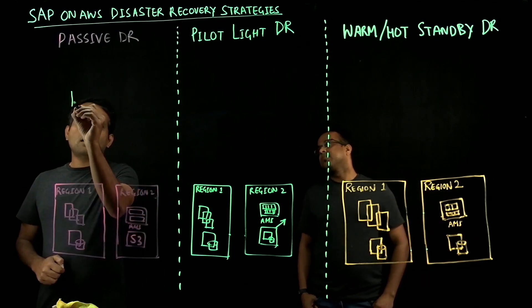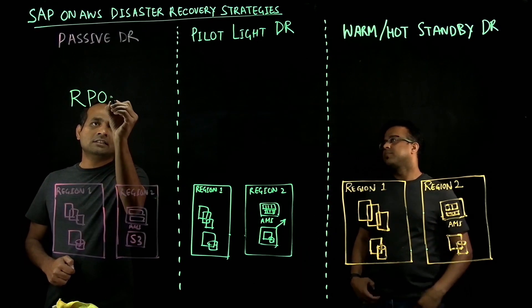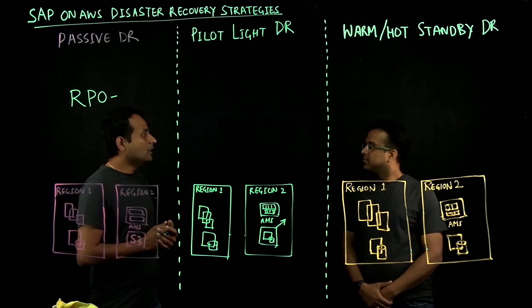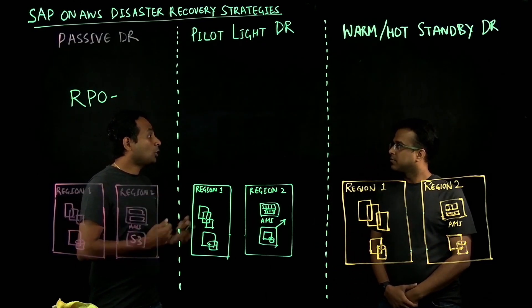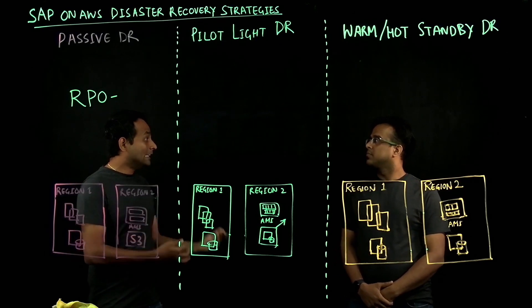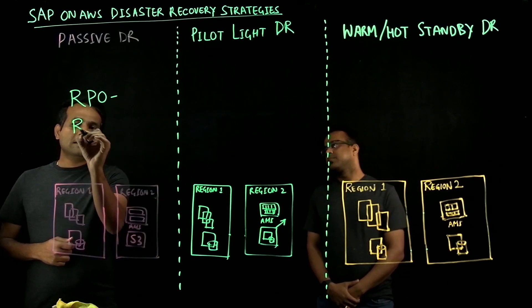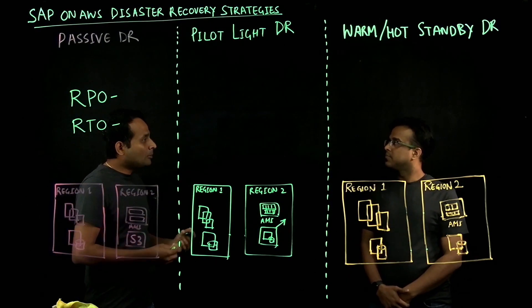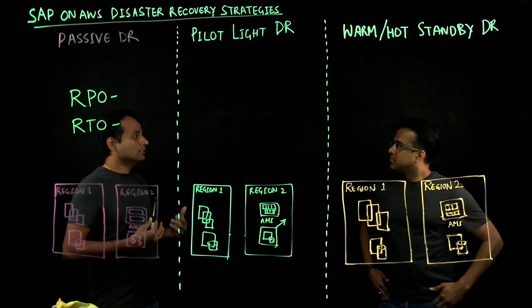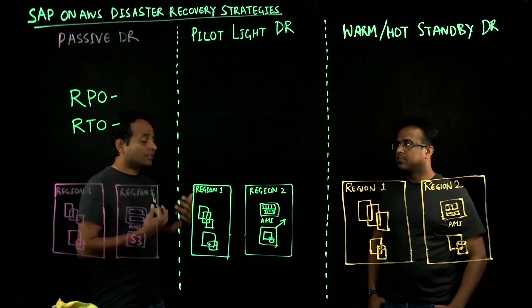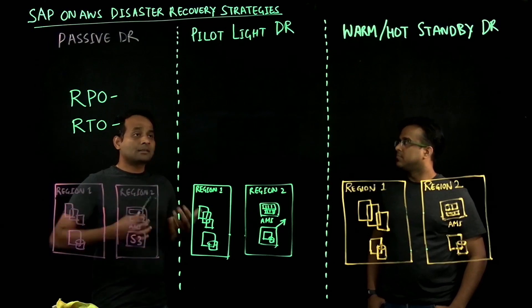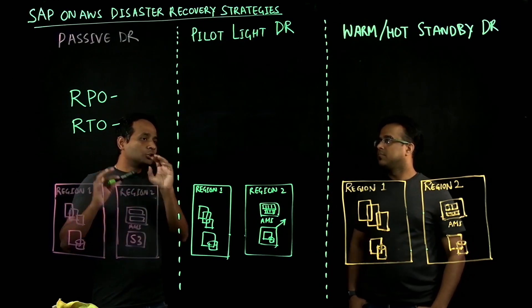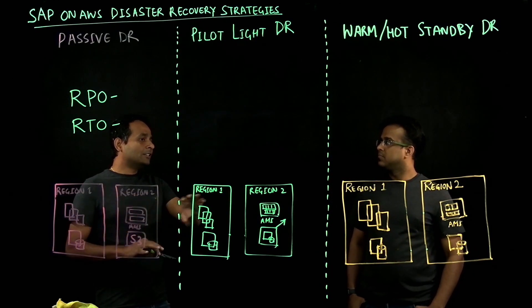First, I want to start with RPO, which is defined as recovery point objective. Recovery point objective is the maximum amount of data loss that a business can tolerate in an unplanned, unexpected event. The second one is recovery time objective. Recovery time objective is defined as the maximum amount of time that a business unit can accept if their critical IT systems are down. These two are the important parameters that will help you choose the right pattern and navigate through the various patterns available.